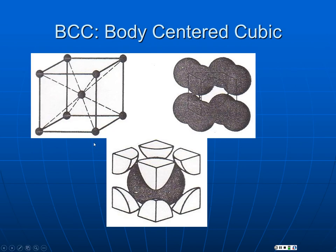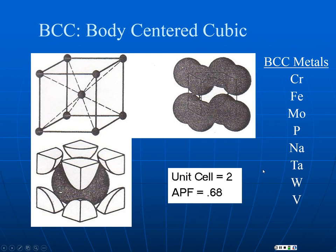Moving to body-centered cubic: this is your most common model representation. This is not the unit cell — the unit cell is what is inside the cube. How many atoms? Two. Now looking at the atomic packing factor, this is not a close-packed structure. You might expect that to mean it's weak, but look at who is BCC at room temperature: chromium, iron, molybdenum, tantalum, tungsten, vanadium. Good tools are chrome-vanadium or chrome-molybdenum-vanadium steels — these are hard, strong, difficult-to-deform materials, inherent to their crystal structure.